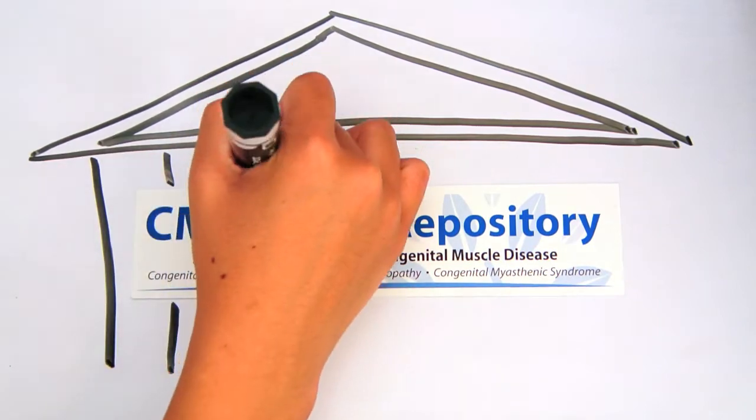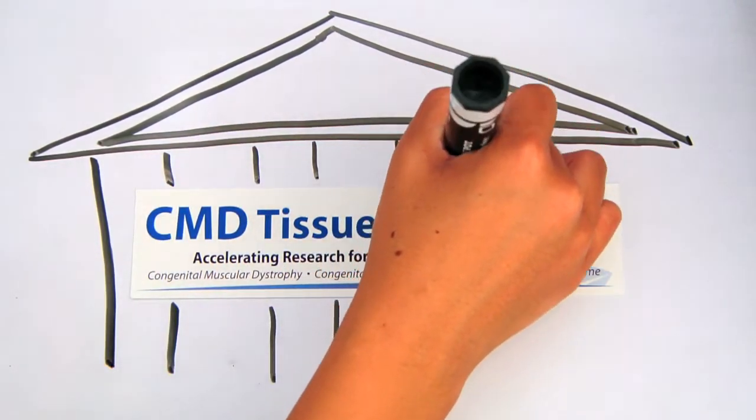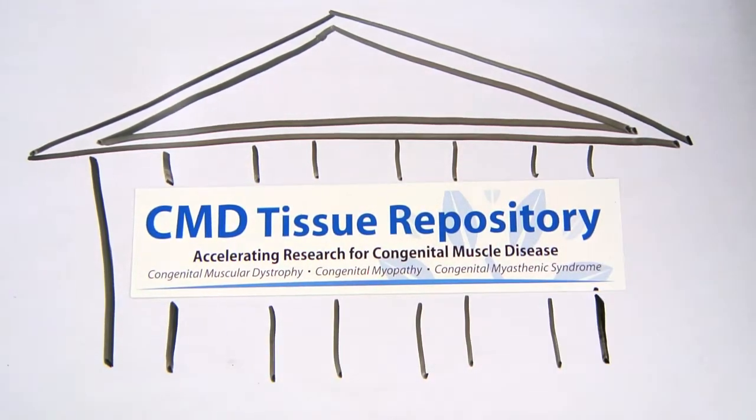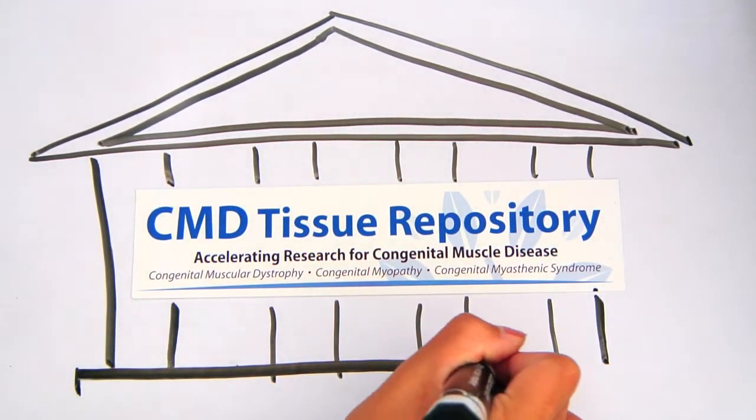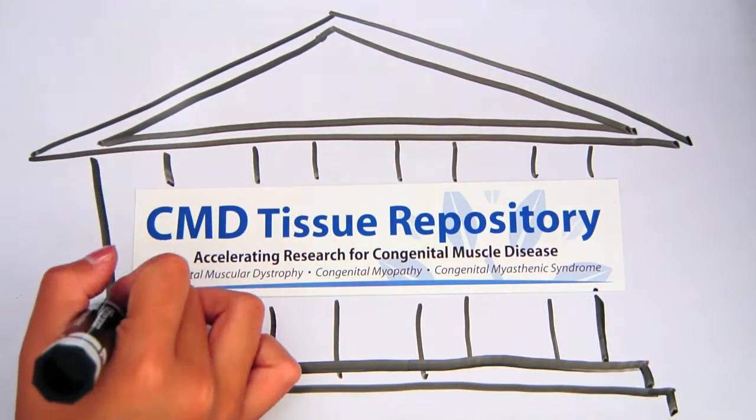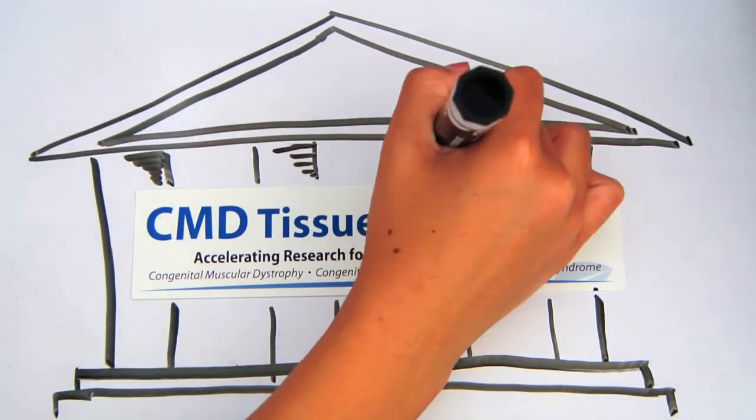If you have congenital muscle disease, muscle biopsies are important because certain characteristics that are found in your biopsy can pinpoint what specific type of congenital muscle disease you have and can be the basis for future testing.